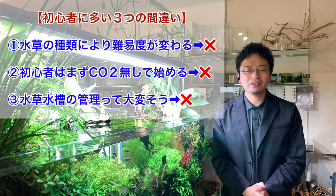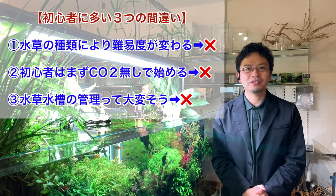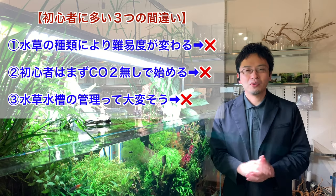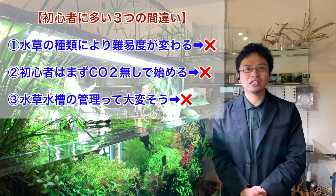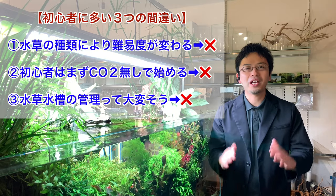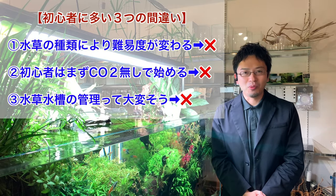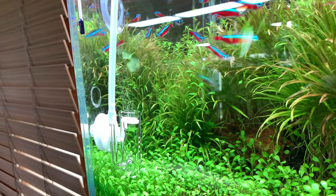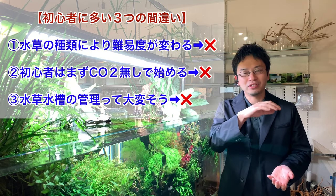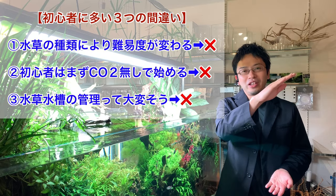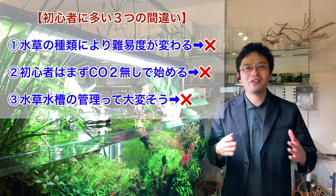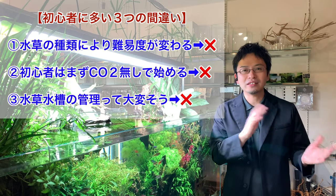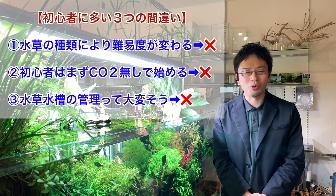Moving on to the second point: beginners should start off with no CO2 — this is completely wrong, not just wrong but very wrong. The correction is that you should use CO2 because you are a beginner. Carbon dioxide is definitely a must for a planted aquarium. If the difficulty level of growing a planted aquarium was 10, by having carbon dioxide the 10 will be reduced to either a one or two. Even for us professionals, growing plants beautifully without CO2 is very, very difficult — almost impossible.